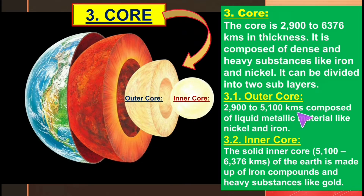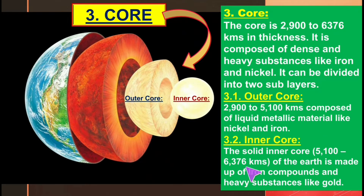The outer core spans 2900 to 5100 kilometers and is composed of liquid metallic material like nickel and iron. The solid inner core spans 5100 to 6376 kilometers and is made up of iron compounds and heavy substances like gold.